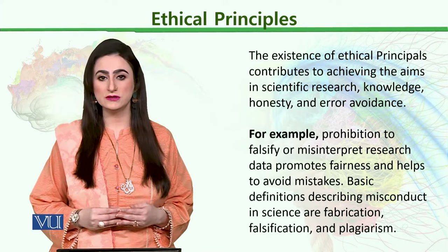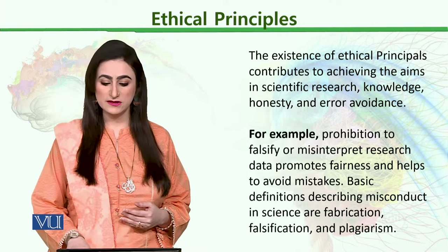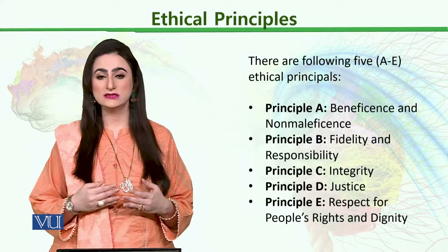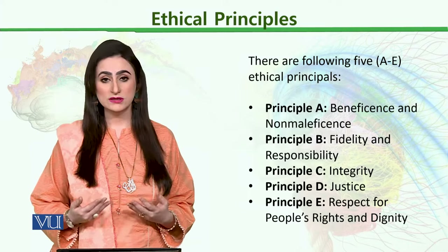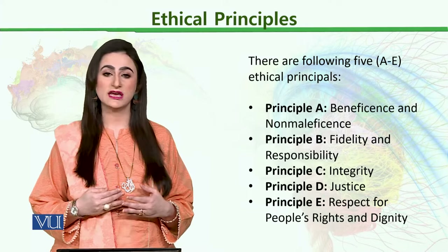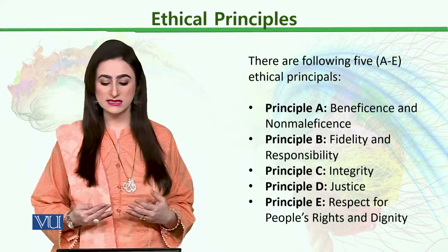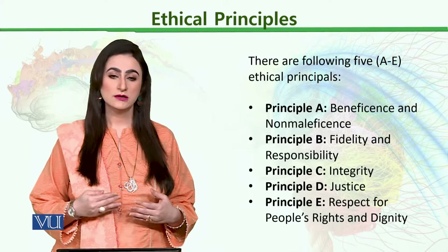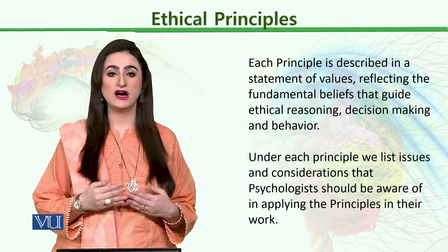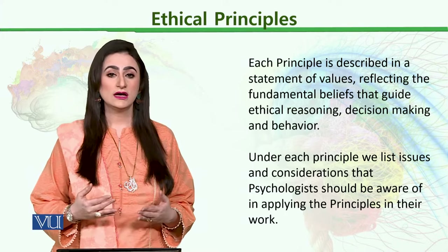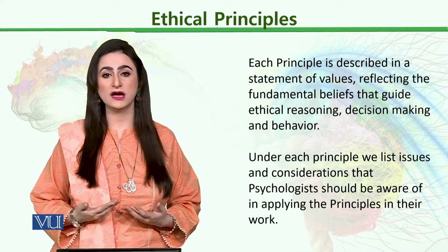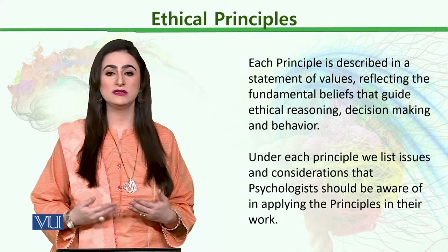The very first principle of responsibility further contains different sub-domains: Principle A is beneficence and non-maleficence; Principle B is fidelity and responsibility; Principle C is integrity; Principle D is justice; and Principle E is respect for people's rights and dignity. Each principle is described in a statement of values — justice has some values, respect has some values, honesty has some values. Each of these connotations contains some kind of value in itself, and each represents a different manifestation.